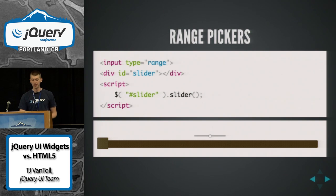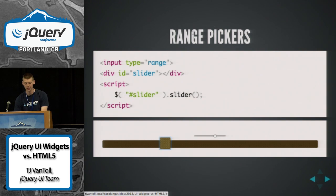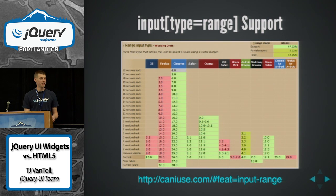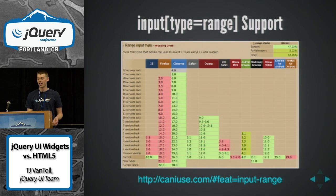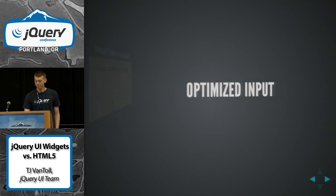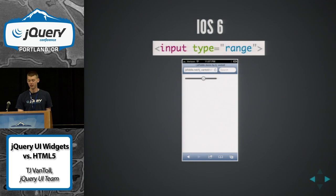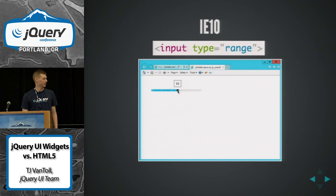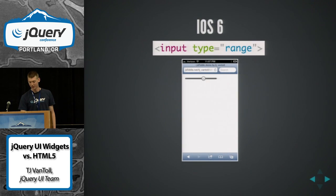The last widget I'm going to go through is range pickers, and I'll go through this even quicker because it's again pretty much the same story. The browser's range picker — this is how Chrome has it implemented. This is what UI Slider looks like. Range support is actually pretty good — it shipped in IE10, it's also in Firefox Nightly, Safari, and Opera, and most of the mobile browsers now have support as well. You get optimized input — this is how iOS's range looks, and Chrome for Android's range. IE10's is pretty slick — they give a little tooltip that shows the value as you move it, which is kind of nice because no one would have any idea what they're sliding.